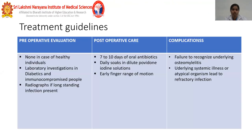Treatment guidelines: preoperatively, in a healthy individual no additional investigations are required. However, in IV drug abusers, immunocompromised, or diabetic patients, laboratory investigations should be done to evaluate counts. Radiographs are needed if long-standing infection is present to rule out osteomyelitis. Postoperative care includes 7 to 10 days of oral antibiotics according to the organisms present, early conversion to sensitive antibiotics, daily soaks in dilute povidone-iodine solution, and early finger range of motion to prevent stiffness. Complications include failure to recognize underlying osteomyelitis and unrecognized systemic illness such as diabetes, which can lead to recurrence.